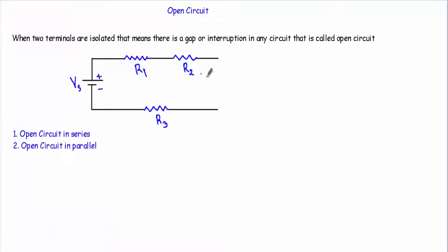In this video I will talk about open circuit. When two terminals are isolated, that means there is a gap or interruption in any circuit, that is called an open circuit. Let's say I have three resistances R1, R2, and R3. Previously they were connected in series, but due to some unavoidable circumstances, this terminal and this terminal get disconnected.